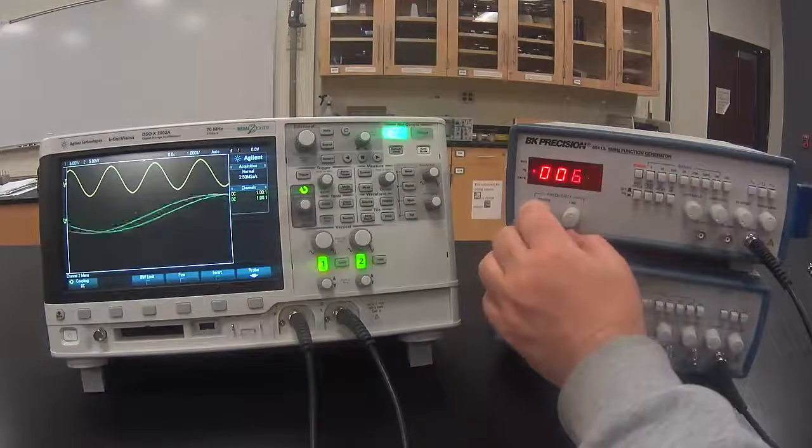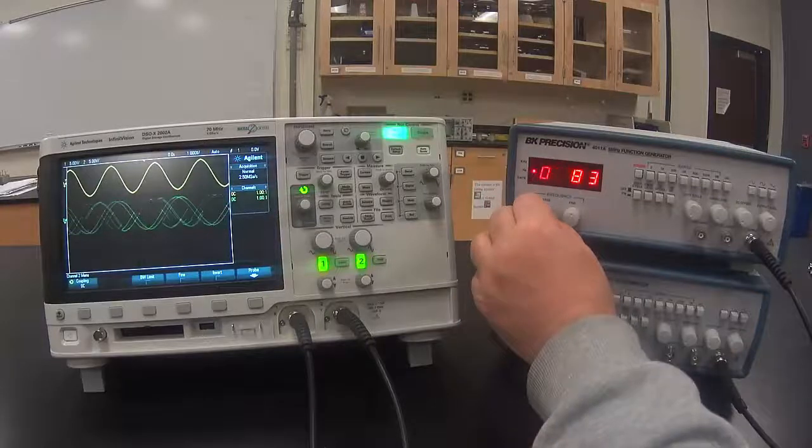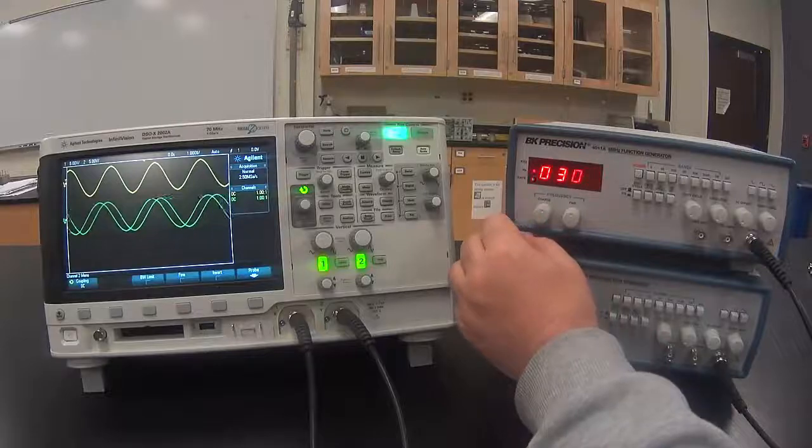Set the frequency on this function generator also between 300 to 500 Hz, almost but not exactly the frequency of the other signal.